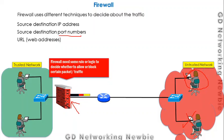We can filter traffic coming from a specific port — for example, HTTP which uses port number 80. So we can allow or block traffic on the basis of port number as well.